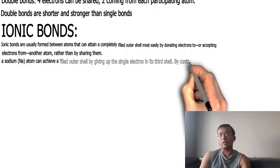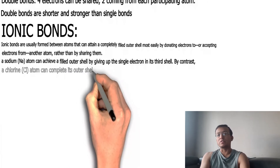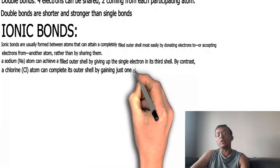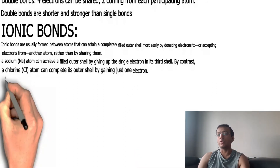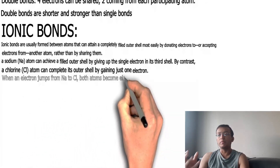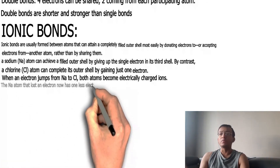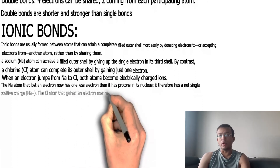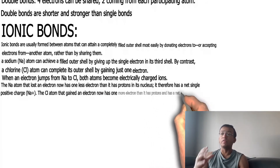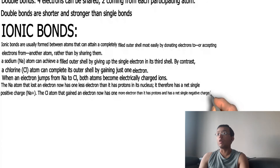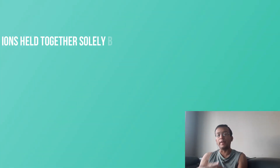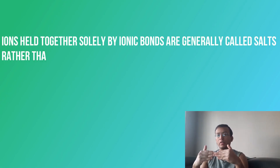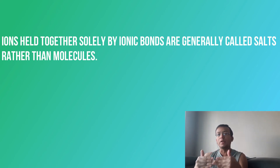For example, a sodium atom achieves a filled outer shell by giving up its single electron in its third shell, while a chlorine atom completes its outer shell by gaining one electron. When an electron jumps from sodium to chlorine, both atoms become electrically charged ions: sodium loses an electron and becomes Na⁺ (net positive charge), while chlorine gains an electron and becomes Cl⁻ (net negative charge). These opposite charges attract each other, and that attraction is the ionic bond.